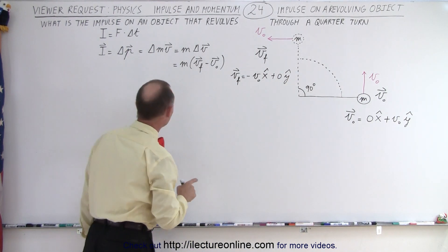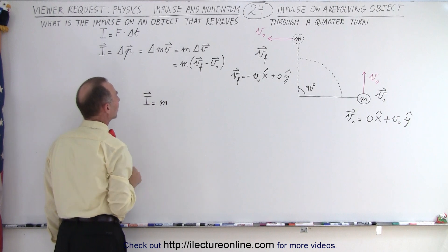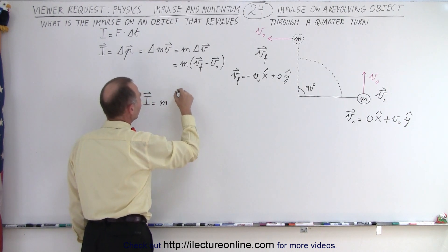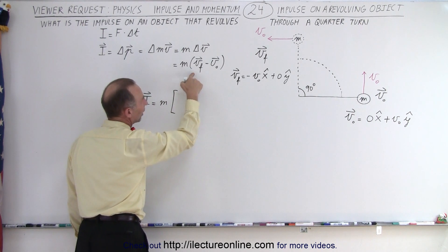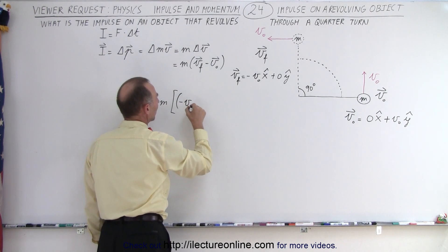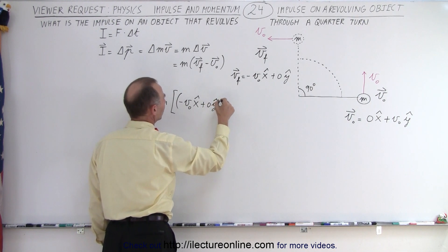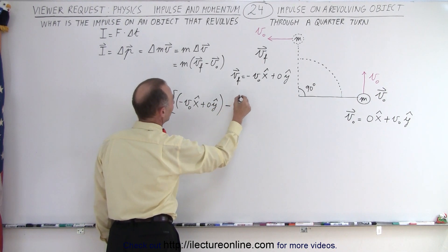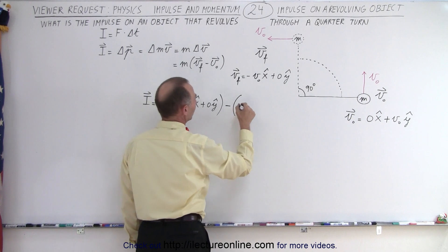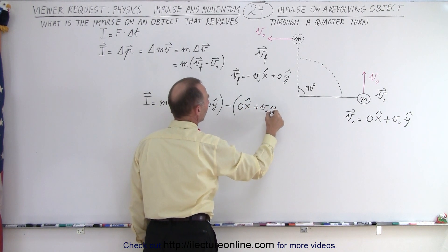Now we're ready to calculate the impulse. So the impulse, I, is equal to the mass, that's, of course, a vector quantity, times the final velocity, which is right here. So that would be minus v sub nought in the x direction, plus 0 in the y direction. And we subtract from that the initial velocity, which is 0 in the x direction, plus v sub nought in the y direction.